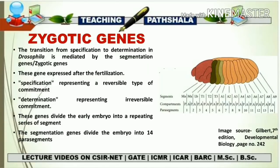The next point about zygotic genes is that these genes divide the early embryo into a repetitive series of segments. The segmentation genes divide the embryo into 14 para-segments. From the diagram you can see a representation of a segment, and how that segment is going to divide into 14 para-segments. We now need to understand what a para-segment is.